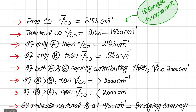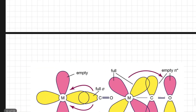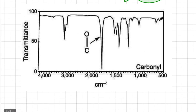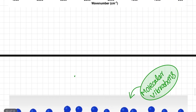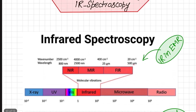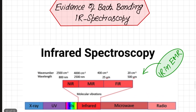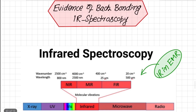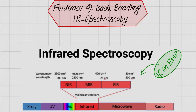In this way, we take the help of IR spectroscopy to obtain information about backbonding. I hope you have understood this lecture. If you have any questions, let me know in the comments and I will respond as soon as possible. Thank you, Allah Hafiz.